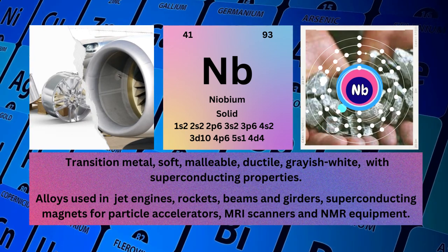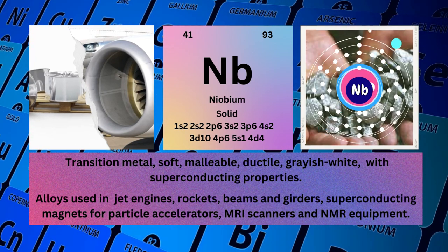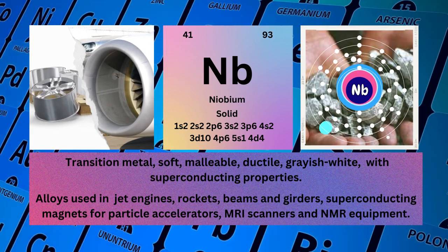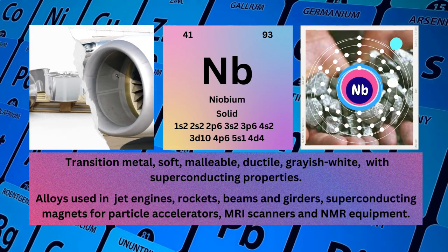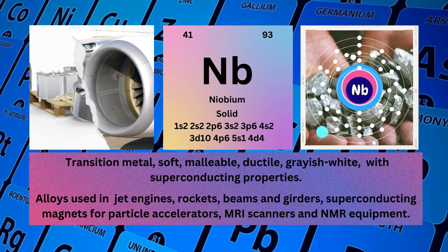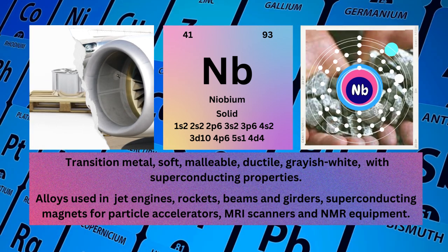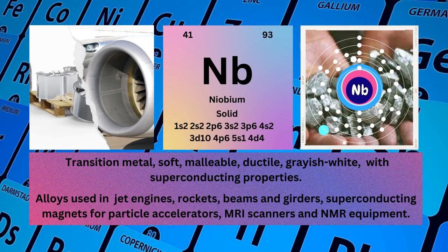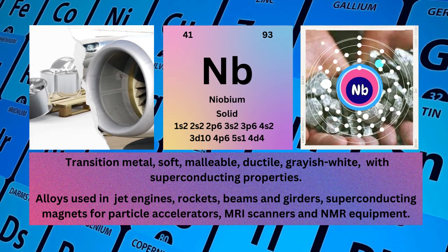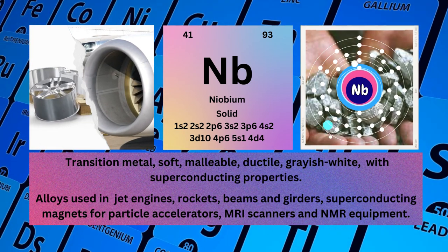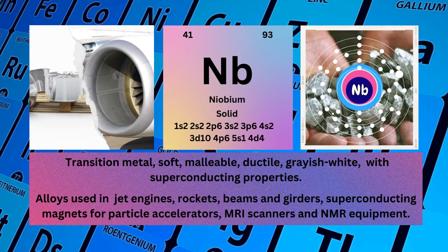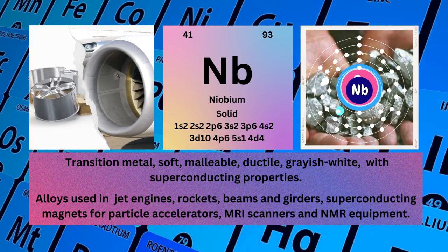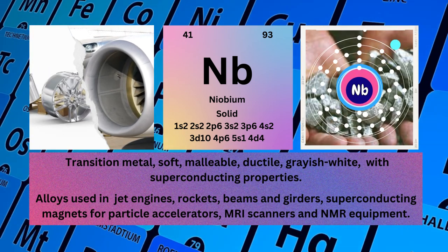Electronic configuration: 1s² 2s² 2p⁶ 3s² 3p⁶ 4s² 3d¹⁰ 4p⁶ 5s¹ 4d⁴. Physical properties: transition metal, soft, malleable, ductile, grayish white, with superconducting properties. Niobium is used for alloys in jet engines, rockets, beams and girders, superconducting magnets for particle accelerators, MRI scanners, and NMR equipment.